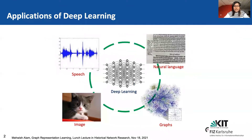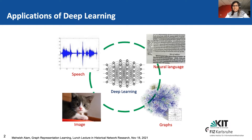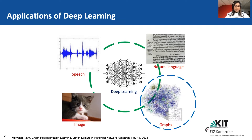We already know that deep learning has been applied to many kinds of data resources. For example, you see here images where you perform image recognition with deep learning approaches. Then you have speech recognition algorithms. For natural language, you have several algorithms for classification, misinformation detection, and these kinds of algorithms for textual data. Today in this lunch lecture I'm going to talk mostly about graphs, and I hope you will enjoy the whole lecture.